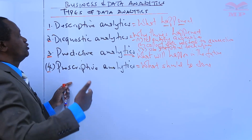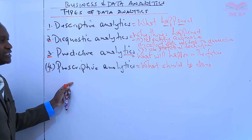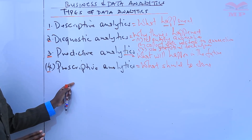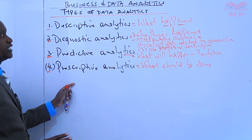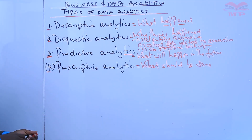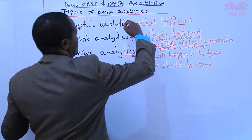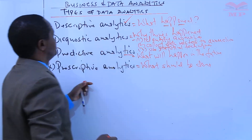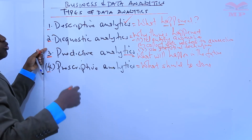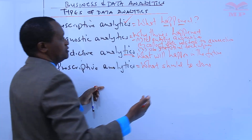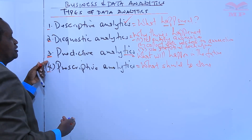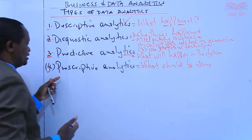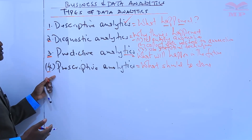So these are the four types of data analytics. Data analytics is a broad field. We've briefly described four types: the first being descriptive analytics, which answers the question what happened; diagnostic analytics, which answers the question why things happened; number three, predictive analytics, which answers the question what will happen in the future; and lastly, prescriptive analytics, which helps answer the question what should be done.